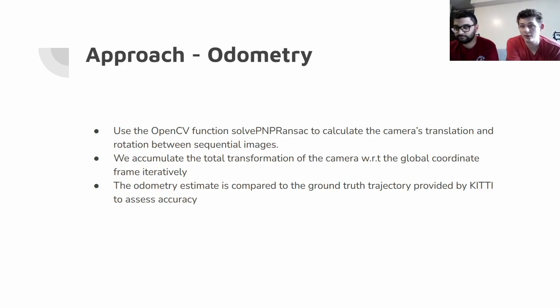Let's go into the approach we took to actually calculate the odometry of the camera over time. We use an OpenCV function called solvePnPRANSAC. This allows us to calculate the camera's translation and rotation between sequential images. We run through all the images and accumulate the total transformation of the camera with respect to the global coordinate frame. This global coordinate frame is placed at the initial position of the left camera. Right when the left camera first pops up, that's our global coordinate frame and all translations are with respect to that very first position. After we've calculated our odometry estimate, we bring in our ground truth data provided by the KITI dataset and assess our accuracy with different metrics.